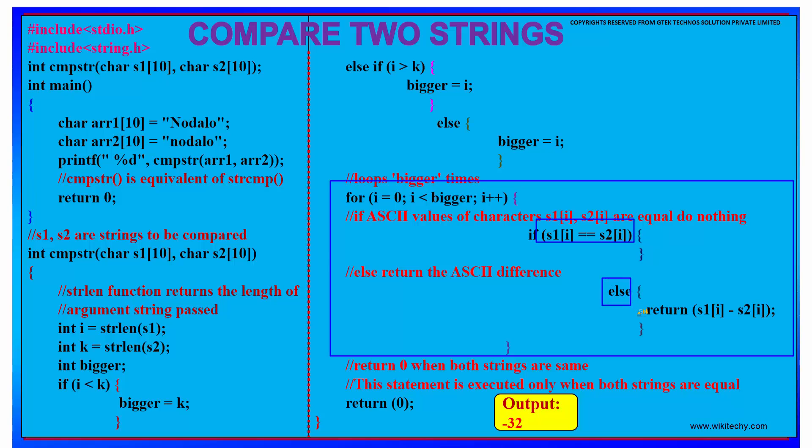Else, if the two strings are different, then we will have the return value to be the ASCII difference. So here, in this case, for these two strings, a return value will be minus 32, which is the difference between the ASCII numbers of these two strings.